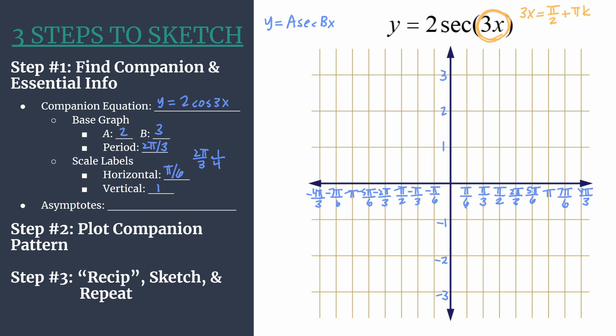Now all we have to do is divide the whole equation by 3, and then we'll get our asymptotes equation. We have x equals π over 6 plus π over 3k.